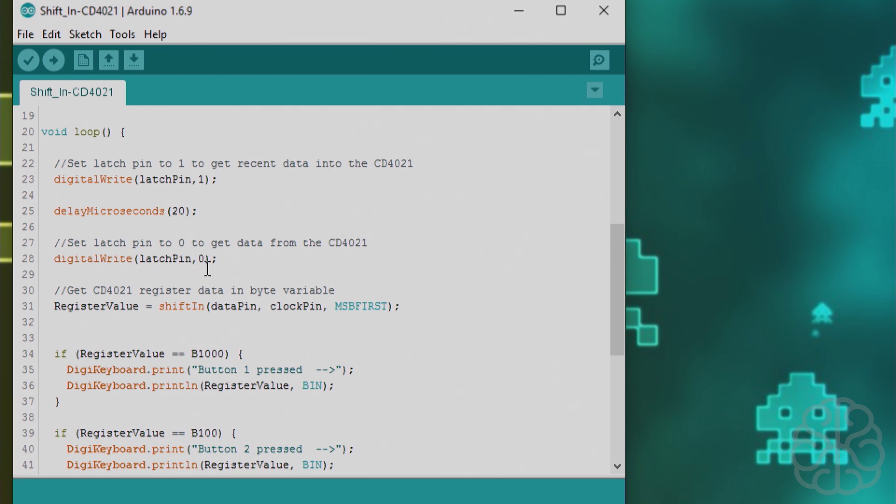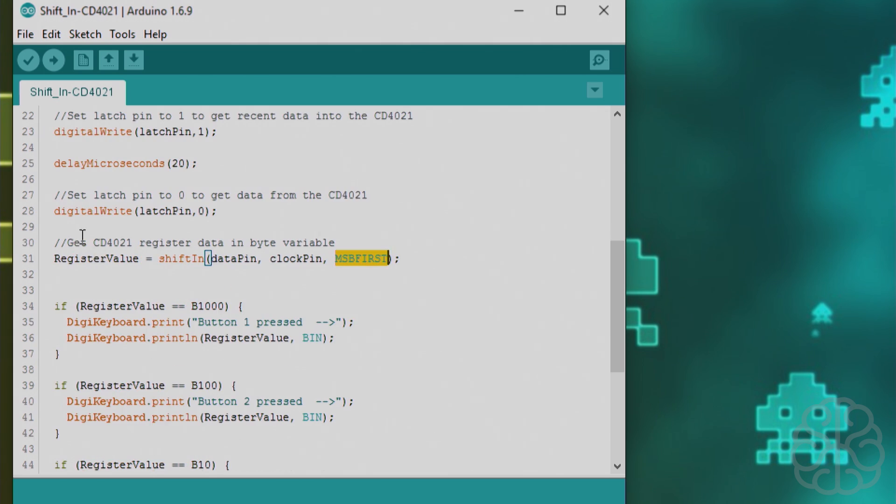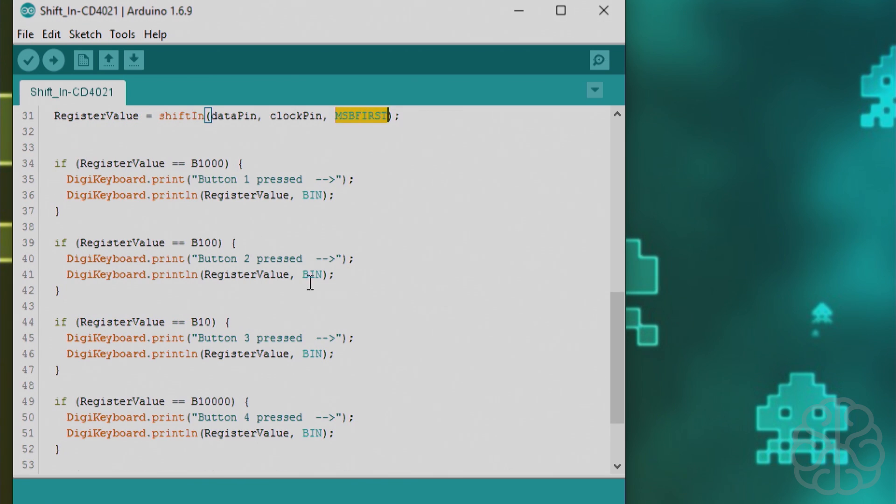When we put the latch pin to 1, the data is registered, and then we put it to 0 to get the data from the shift register. We get that register value, eight bits of it, and put it into the variable. registerValue equals shiftIn dataPin, clockPin, and the first bit first. Then depending on the register value, it's B for binary 1000.